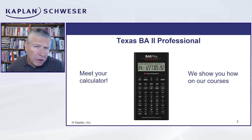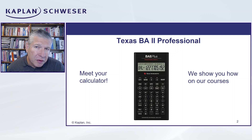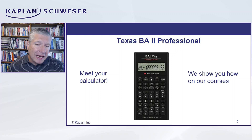Now there are a number of calculators that you could potentially use. But the one to get hold of, I recommend, is the professional version — the Texas BA Professional. And it does make a difference for one or two calculations which you can only do on this one; you can't do them on the other versions.